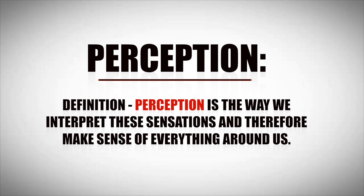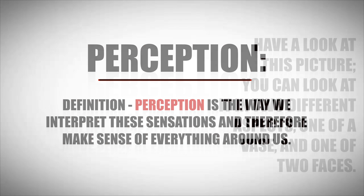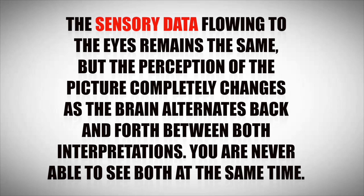Perception is the way we interpret these sensations and therefore makes sense of everything around us. The sensory data flowing to the eyes remains the same, but the perception of the picture completely changes as the brain alternates back and forth between both interpretations. You are never able to see both at the same time.